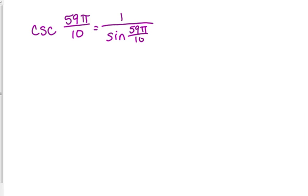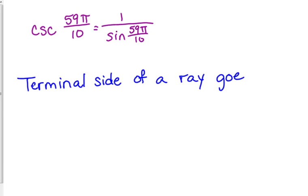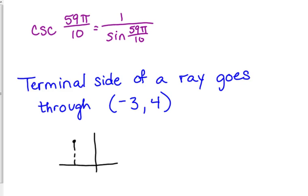The second thing that I need to tell you about, and I don't like that they put it on the assignment called the unit circle, because this really has nothing to do with the unit circle, but there are some problems on there that say the terminal side of a ray goes through the point or something like that is the terminology. I can't remember exactly how it's phrased, but something like this. They say the terminal side of a ray goes through the point negative 3, 4. Well, what you need to do is you need to graph negative 3, 4. So that's in the second quadrant.